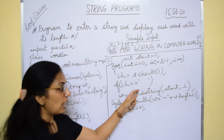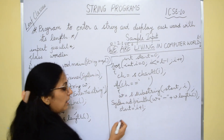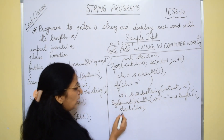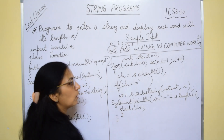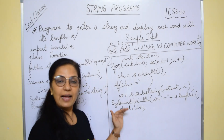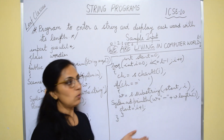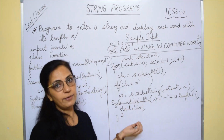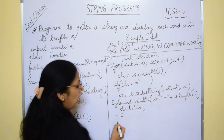When that condition is true — i.e., when the space was found — in that condition only, this start value will be updated. Then you close the if and then close the for loop. I feel this way is more convenient for you — extraction of the word and finding the length of the word. Please do the program, practice it.